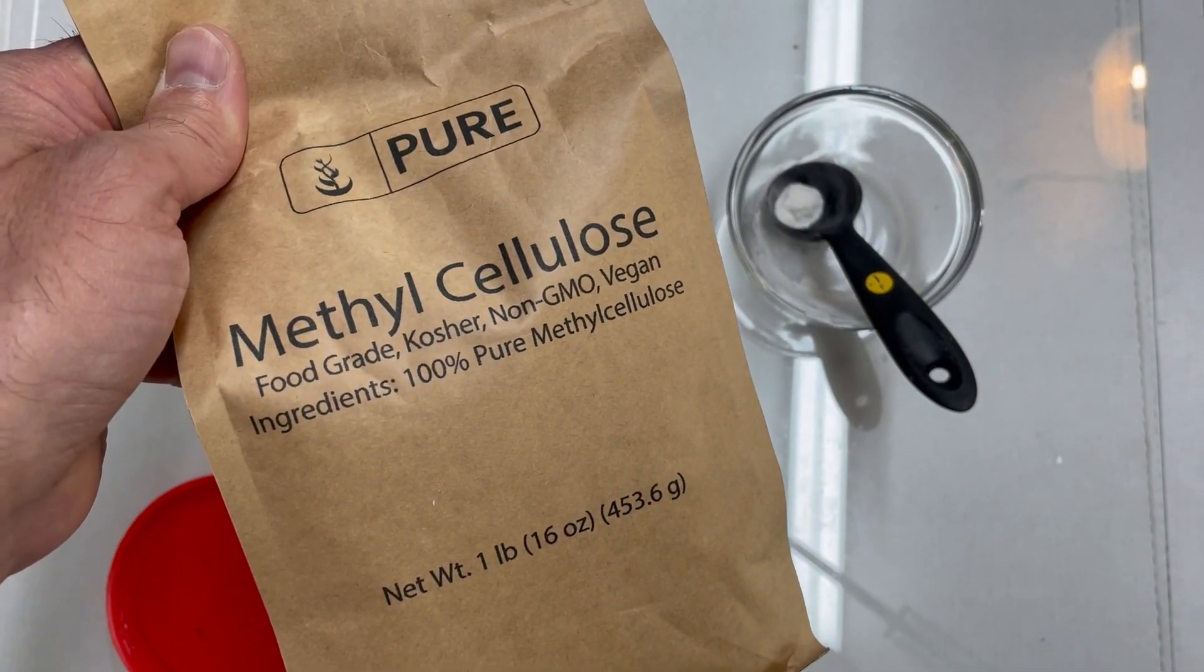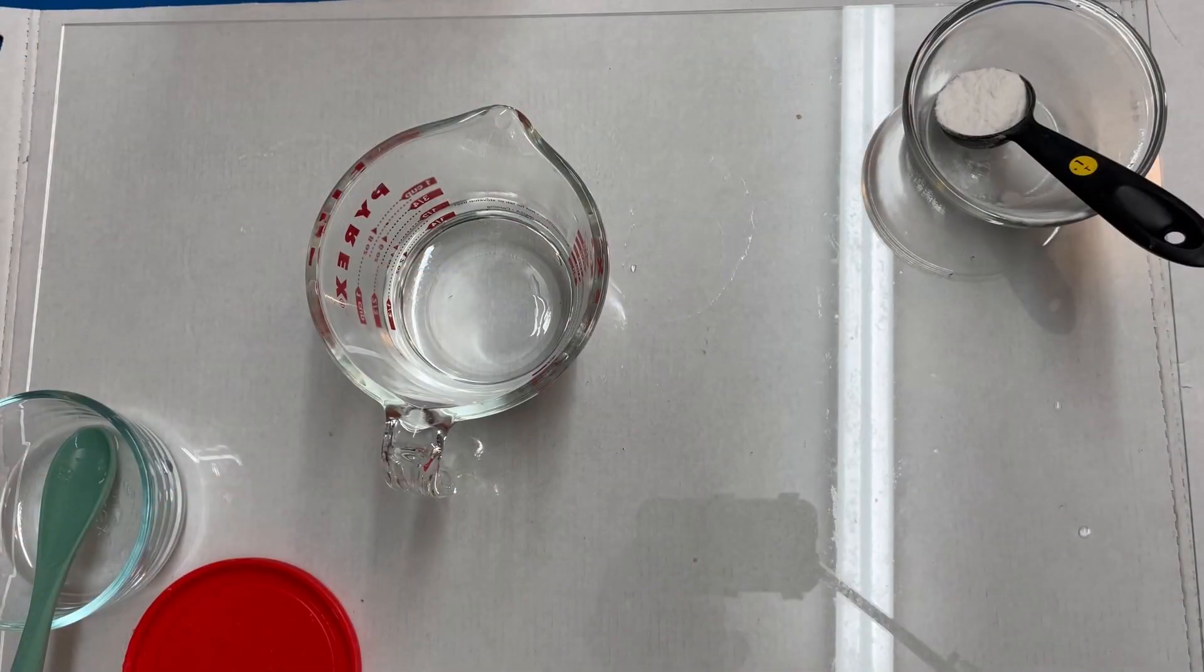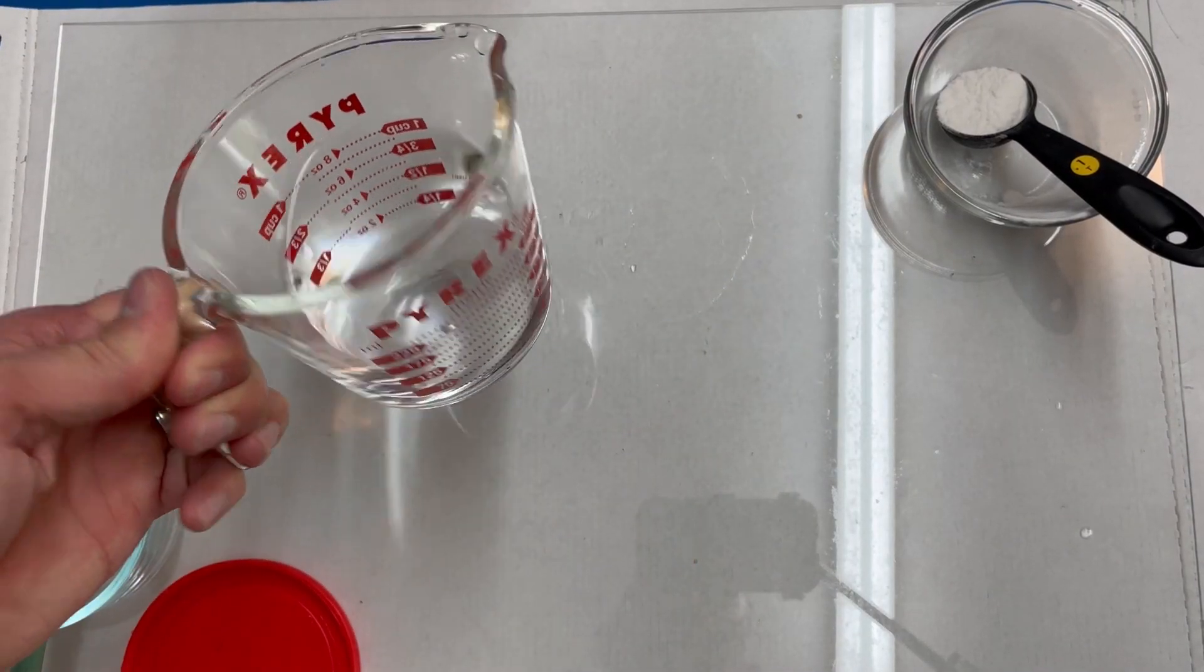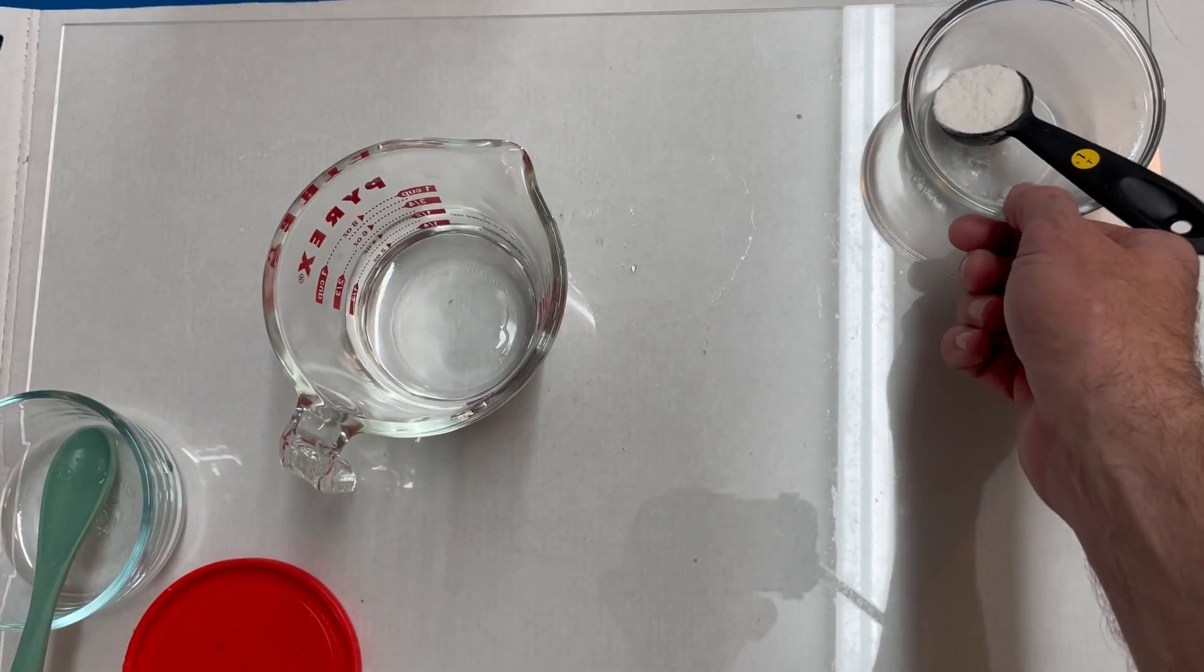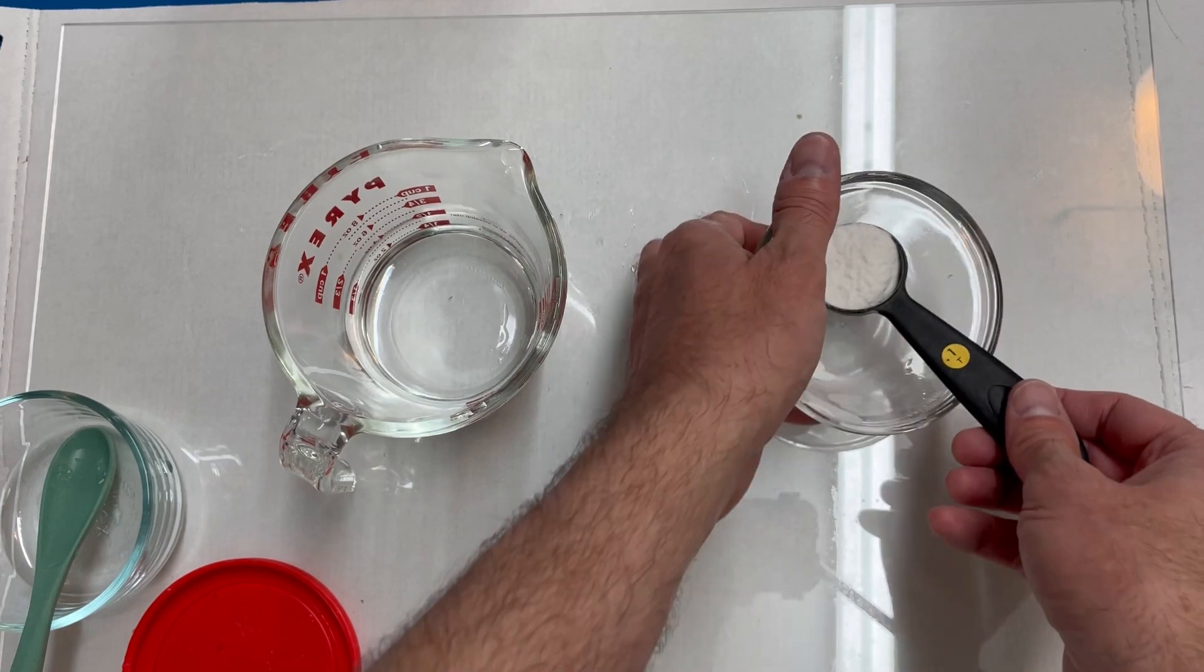I'm going to use Methyl Cellulose. It comes in a powdered form. I take a quarter cup of very warm water and a tablespoon of powdered Methyl Cellulose. I'll put in just a small amount of powder.